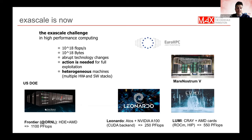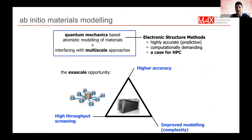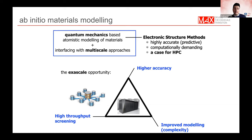This is MAX's role: taking these codes, and Quantum Espresso in particular, to be able to exploit these HPC machines. Generally speaking, ab initio materials modeling based on electronic structure, quantum mechanical, atomistic description of systems is a good candidate to exploit this computing power because it is highly accurate and predictive, while also being computationally demanding compared to other kinds of calculations. Exascale really comes as an opportunity.